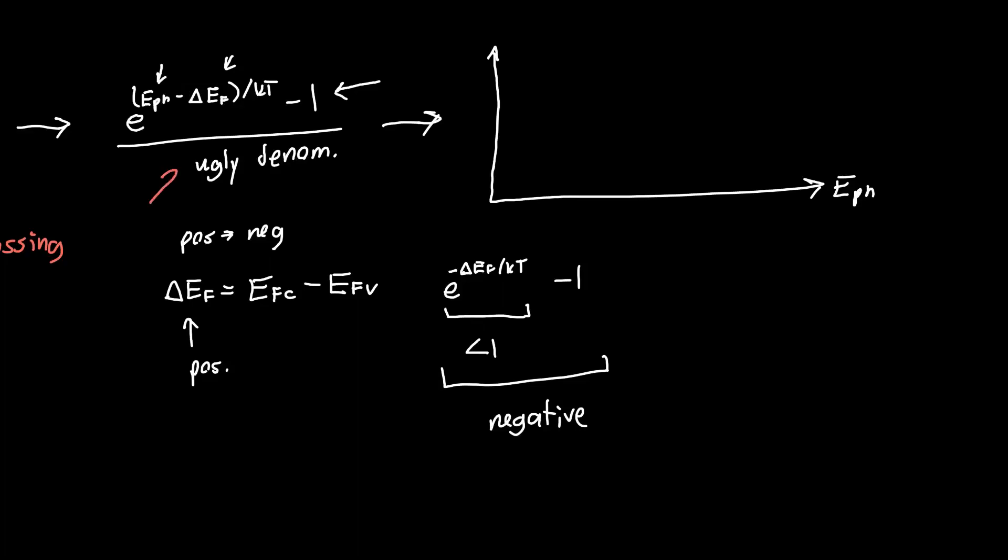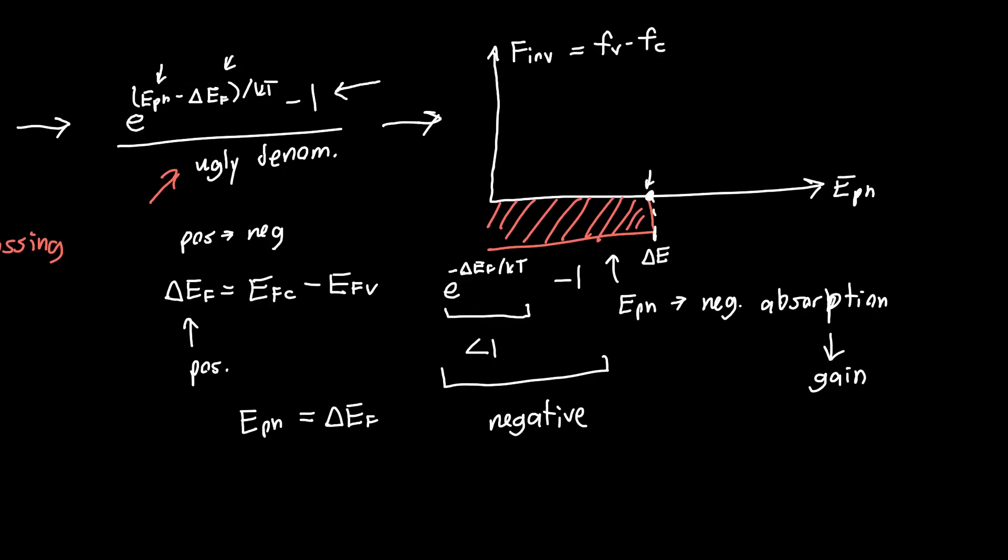We don't know what the Fermi inversion factor is exactly because it's got this ugly denominator, but we know it's in the range of plus to minus 1, because it's a probability minus another probability. So it has to be between minus 1 and 1. It's somewhere in this negative region, below 0. This is our Fermi inversion factor, Fv minus Fc. This tells us that for small photon energies, we can actually get negative absorption, or we can get gain. But then, at some point, when our photon energy is equal to this ΔEF term, or our Fermi level splitting, that's where our crossover point happens. At this point, the Fermi factor becomes positive.